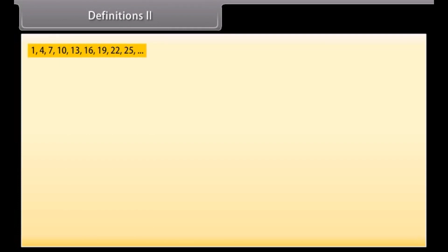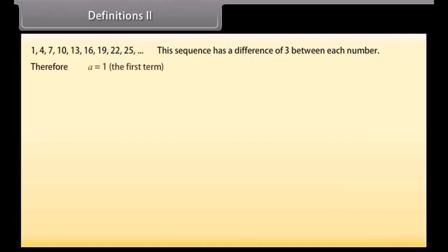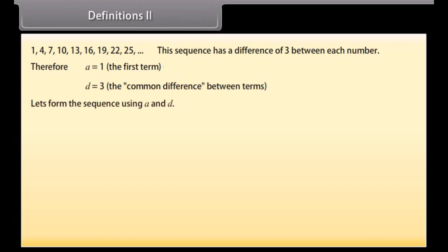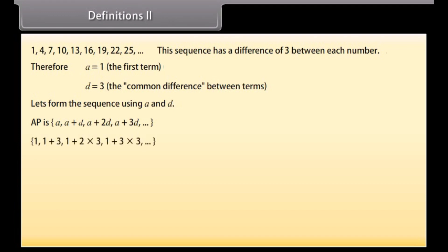Look at this example. We can see that this sequence has a difference of three between each number. Therefore, A is equal to 1 (the first term) and D is equal to 3 (the common difference). Substituting the values of A and D into the general form, we get: 1, 1 plus 3, 1 plus 2 into 3, 1 plus 3 into 3, and so on — which gives the sequence 1, 4, 7, 10, and so on.